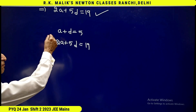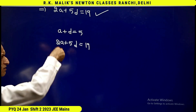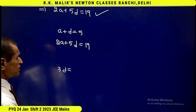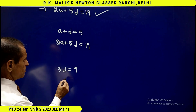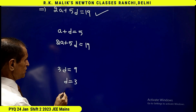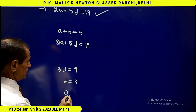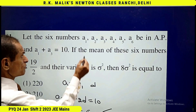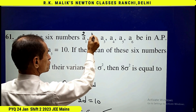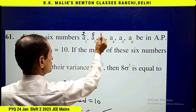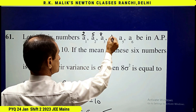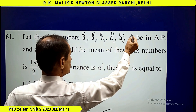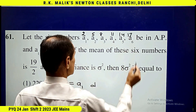Now multiply the first equation by 2 and subtract. You will be getting 3d by 6 is equal to 9, that is d equal to 3. Hence a is equal to 2. So the six numbers are 2, 5, 8, 11, 14 and 17.